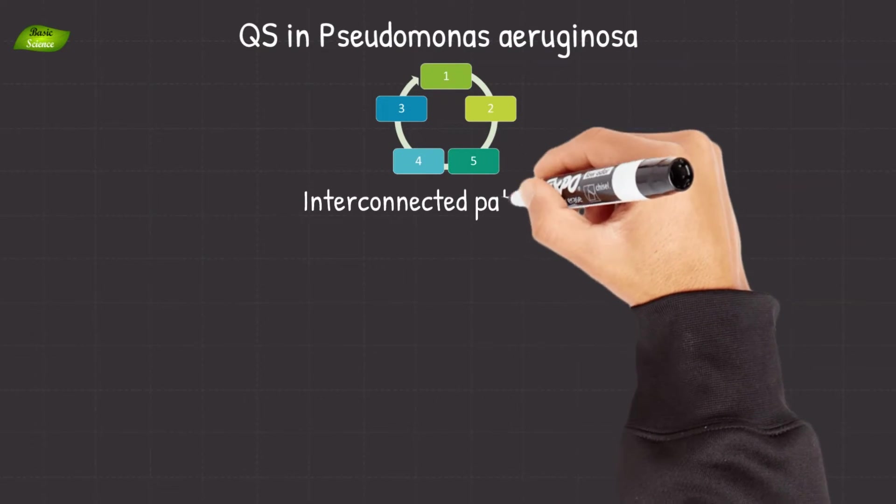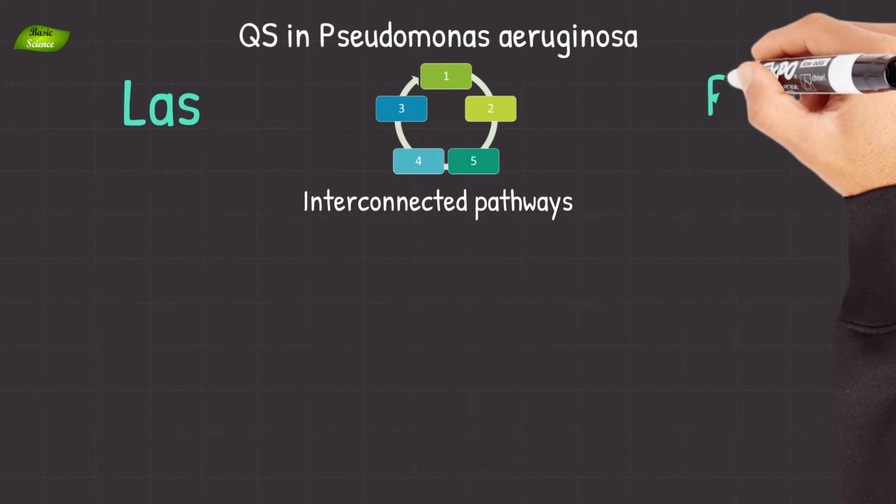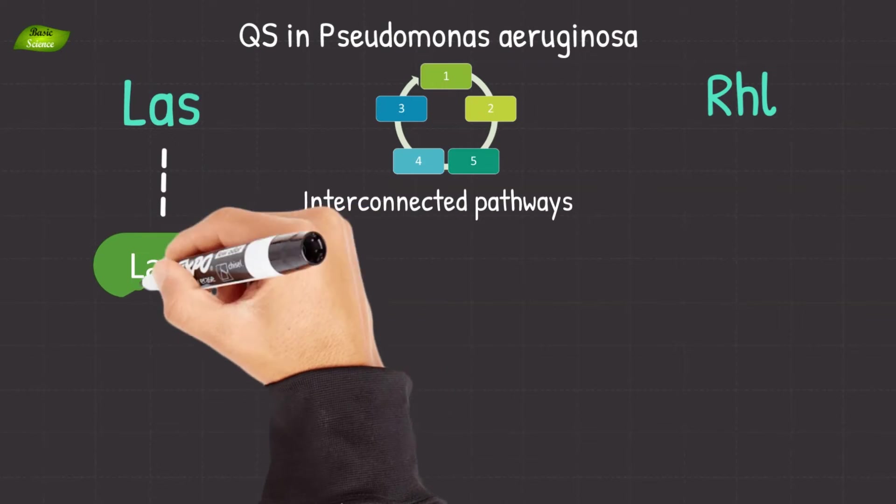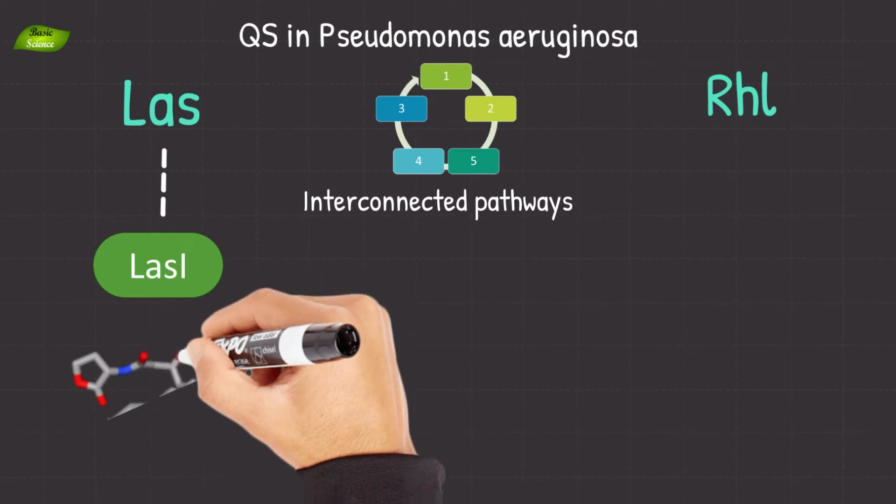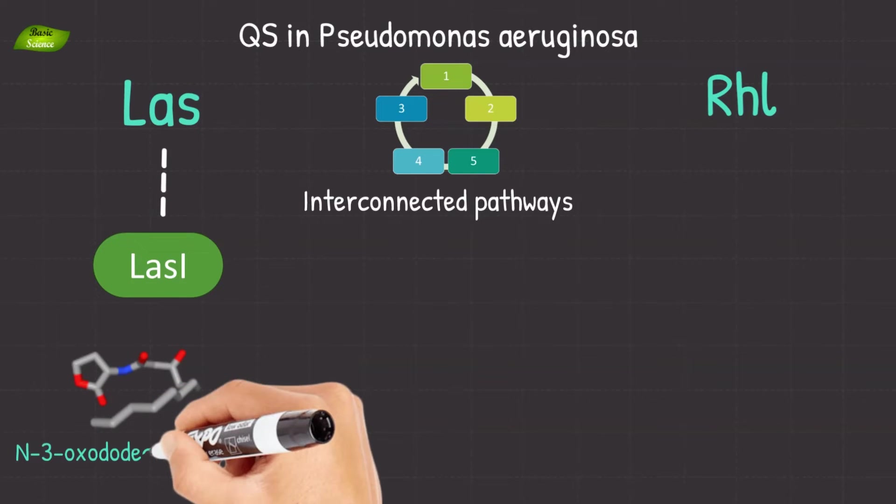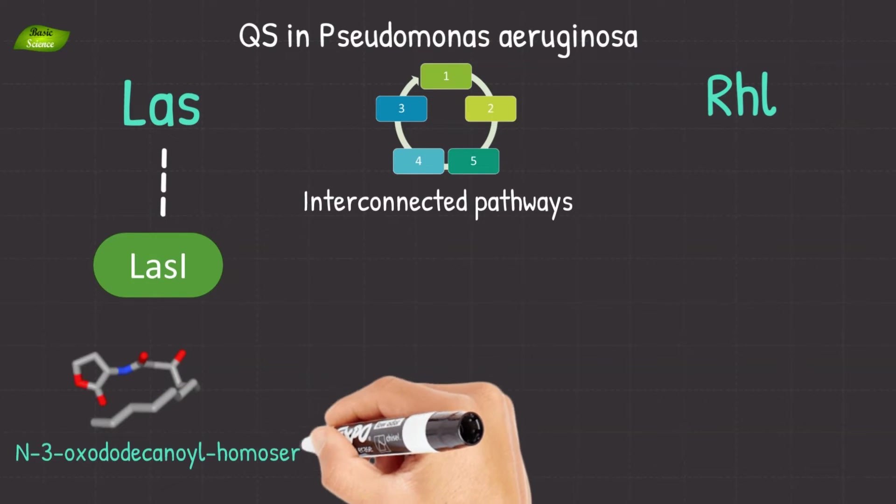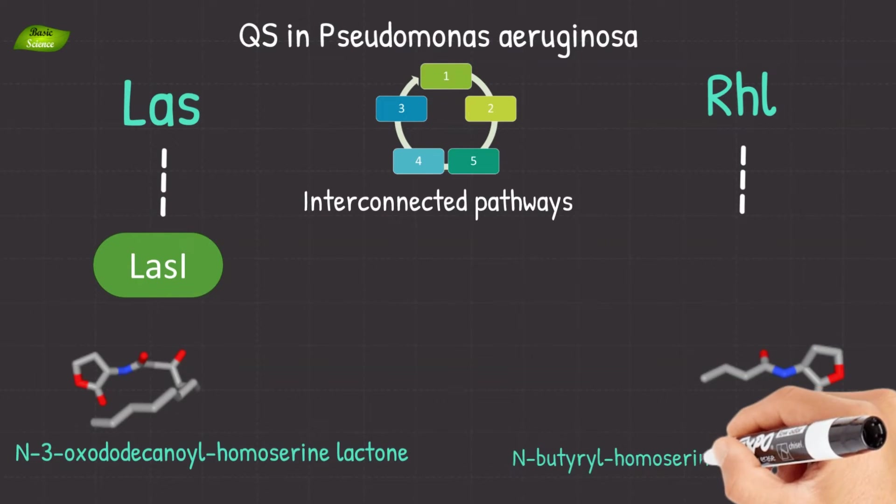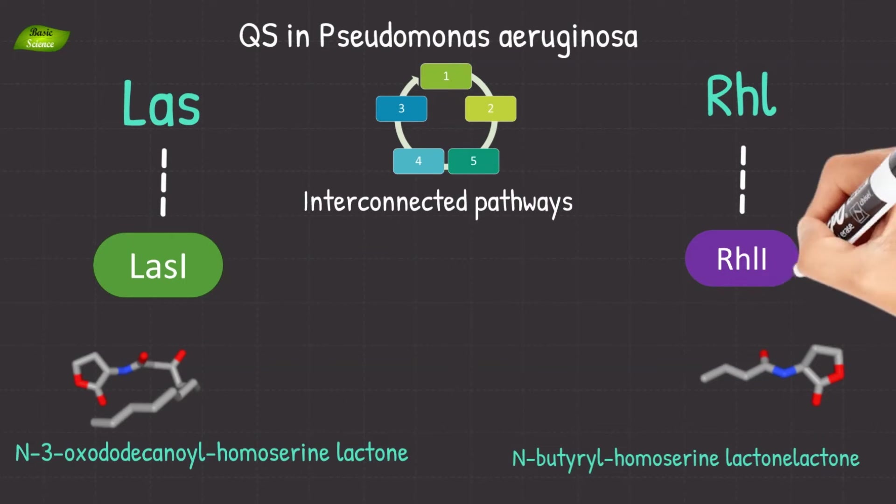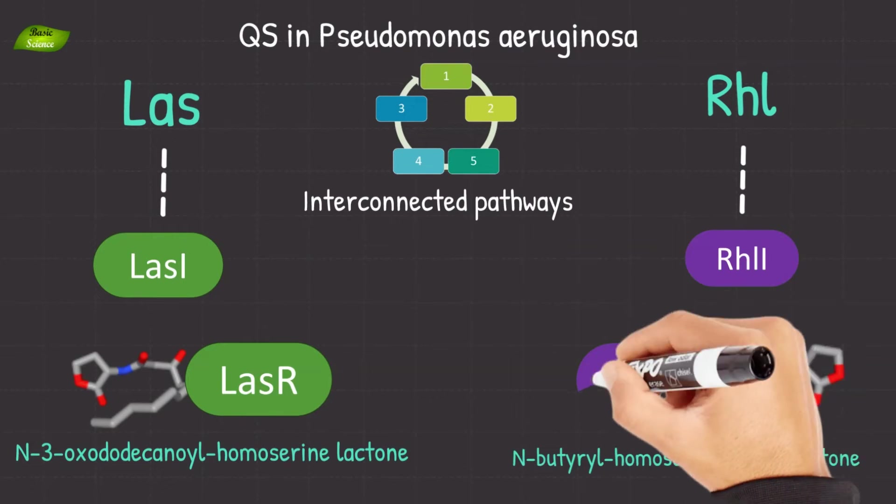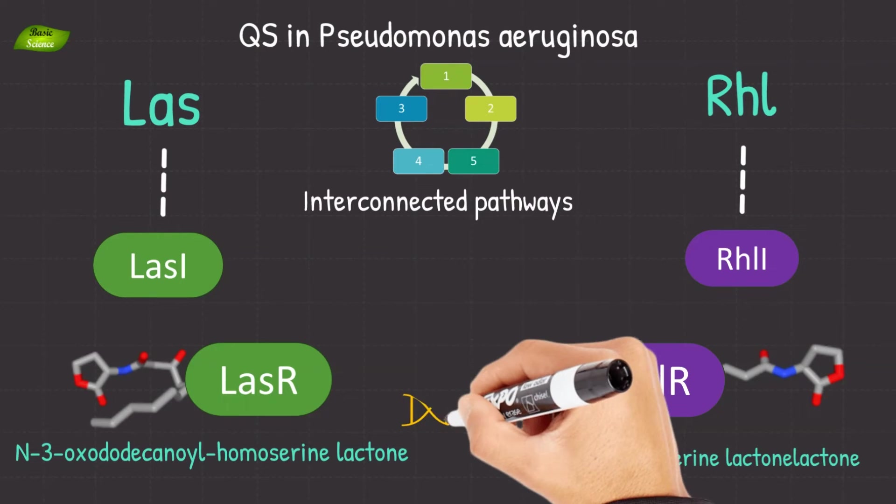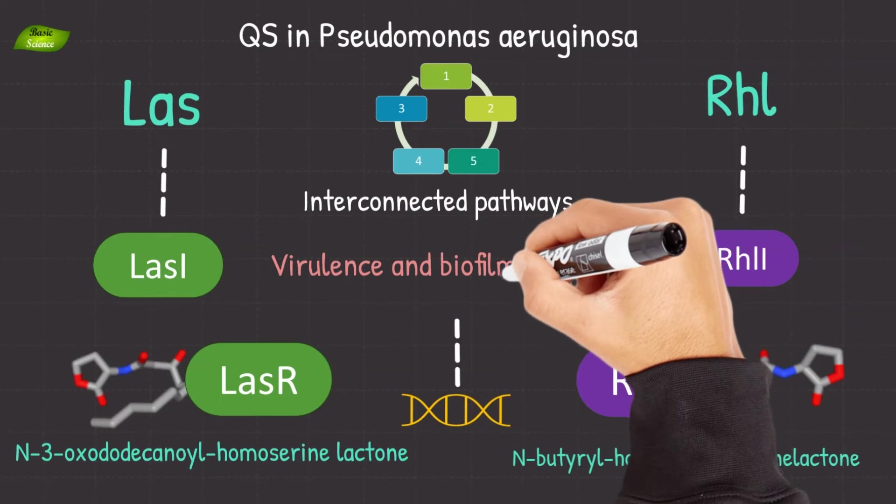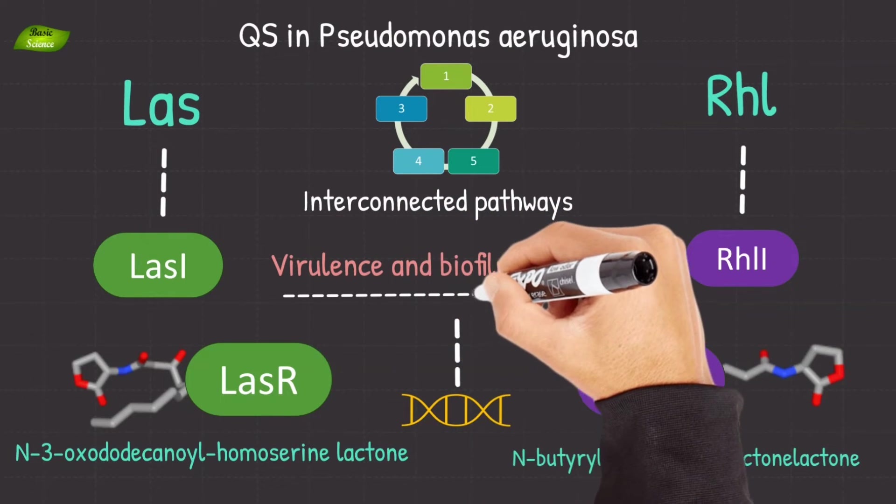The quorum sensing system of Pseudomonas aeruginosa is highly complex and involves multiple interconnected pathways. LAS and RHL are two well-studied systems. The LAS system involves the LAS-I synthase producing N3-oxododacanyl homoserine lactone, while the RHL system produces N-butyryl homoserine lactone through RHL-I synthase. These signaling molecules bind to respective receptors LAS-R and RHL-R, initiating cascades of gene expression that regulate virulence factors, biofilm formation, and other pathogenic traits.